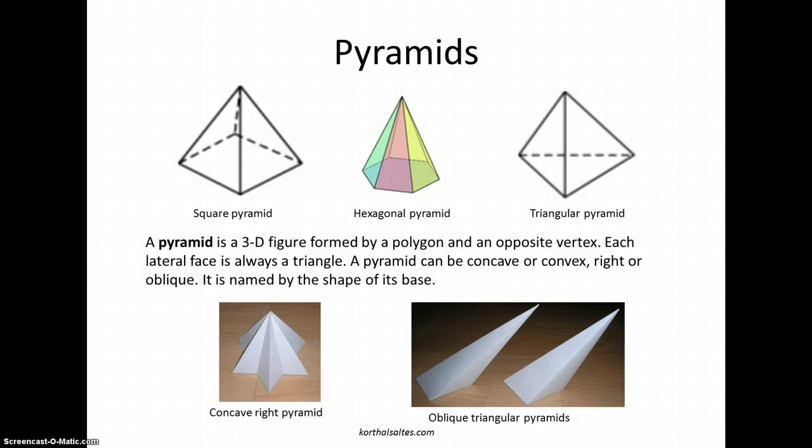Here we have a square pyramid. The base is the square, and the sides rise to the opposite vertex. The hexagonal pyramid has a hexagon for the base, and a triangular pyramid has a triangle for the base.